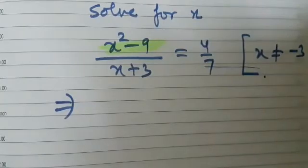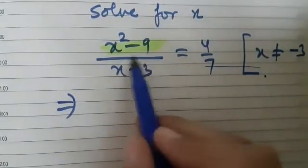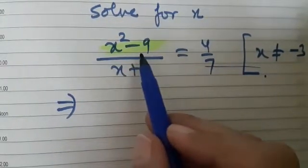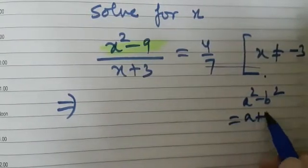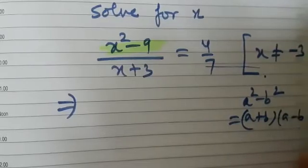Can you tell me how you are going to solve x squared minus 9? Yes, you can use the identity a squared minus b squared, which is a plus b into a minus b.